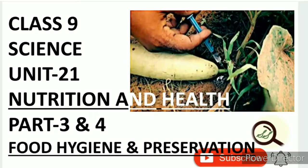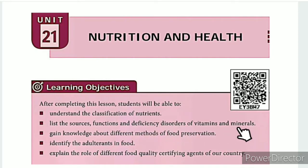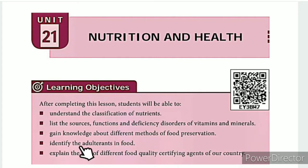Greetings from SS class 9 science unit 21, nutrition and health, parts 3 and 4: food hygiene and preservation. The lesson-level learning objectives are: understand the classification of nutrients, list the sources, functions and deficiency disorders of vitamins and minerals, gain knowledge about different methods of food preservation, identify the adult trends in food, and explain the role of different food quality certifying agents of our country.